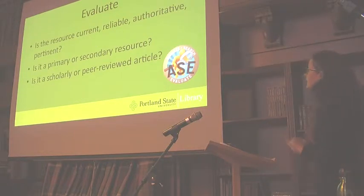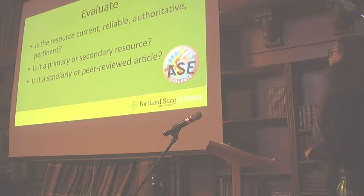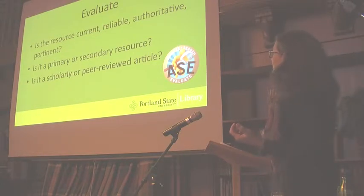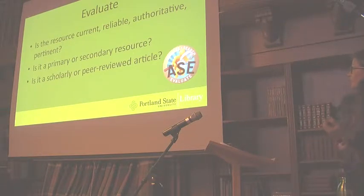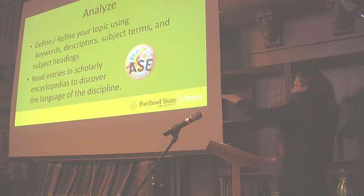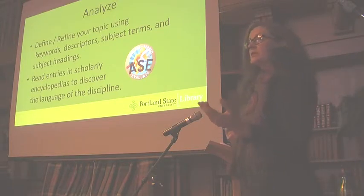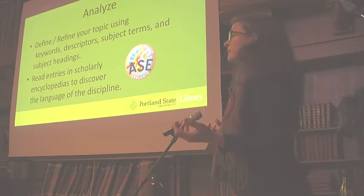Then evaluate your resources. Are they current, reliable, authoritative, pertinent? That's the CRAAP model. Is it a primary or secondary resource? Is it scholarly or peer-reviewed? And then what happens? It goes right back to analyze — you can look at that record and find more descriptors and subject headings, the controlled vocabulary of your research.